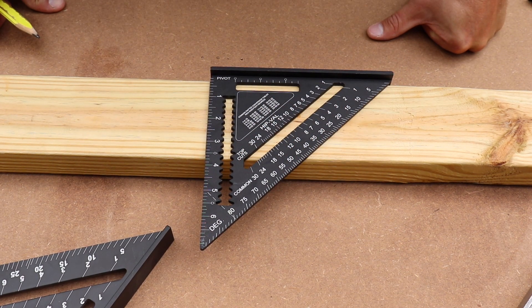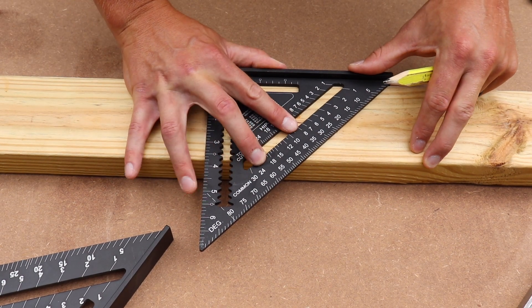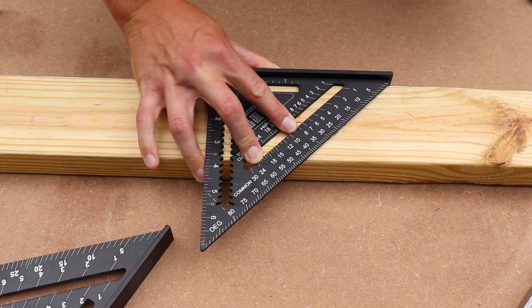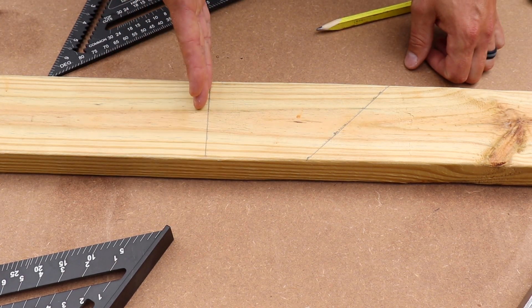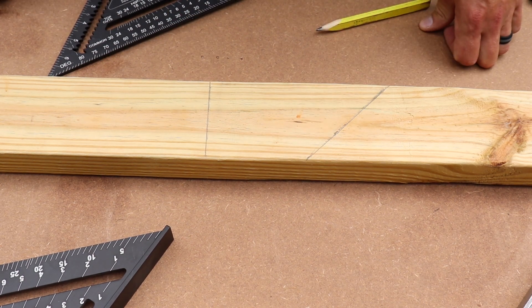You can also use this to mark 45 degree lines. Same method, just hold your speed square tight against your workpiece and strike a line. So now you have a perfectly straight 90 degree angle cut and a 45 degree cut as well.